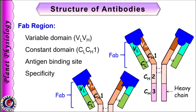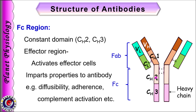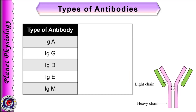The remaining region of the antibody, which is made up of the second and third constant domains of the heavy chains, i.e., CH2 and CH3 segments, forms the FC region. FC stands for crystallizable fragment. It is the effector region which attaches to specific effector cells like macrophages or natural killer cells and activates them to destroy the antigens. The FC region also imparts other properties to the antibodies, such as their diffusibility across membranes, adherence to various surfaces, and activation of the complement system.